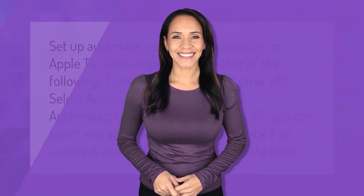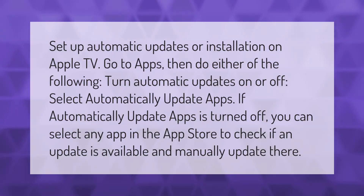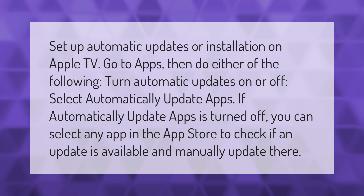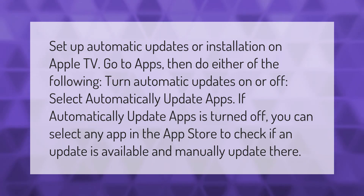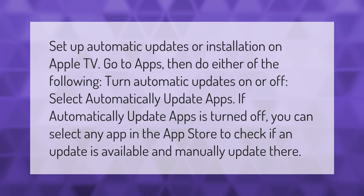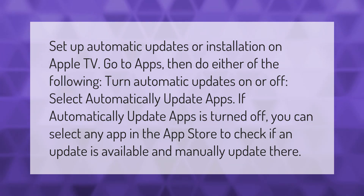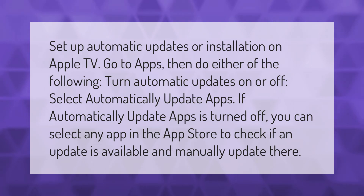To set up automatic updates or installation on Apple TV, go to Apps, then do either of the following: turn Automatic Updates on or off by selecting Automatically Update Apps. If Automatically Update Apps is turned off, you can select any app in the App Store to check if an update is available and manually update it.